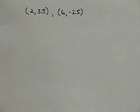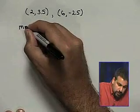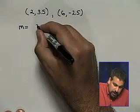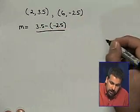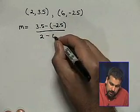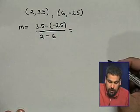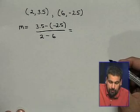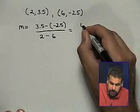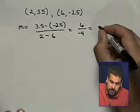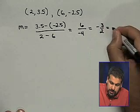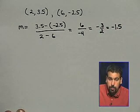Let's go over that example. You were asked to find the slope-intercept form of the line containing the points 2, 3.5 and 6, negative 2.5. We first find the slope: 3.5 minus negative 2.5 over 2 minus 6. That's 3.5 plus 2.5, which equals 6, over negative 4, giving us negative 3 halves, or negative 1.5.